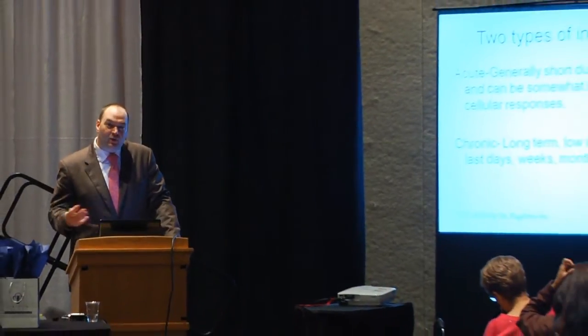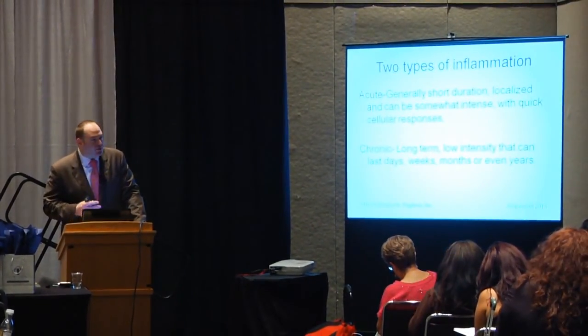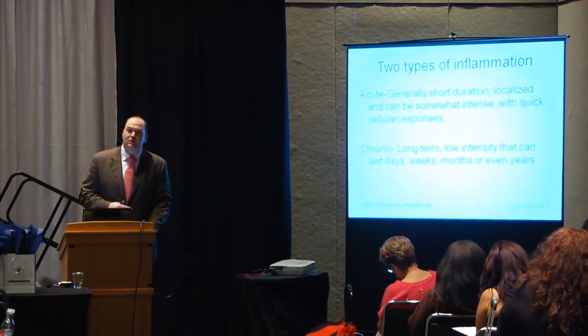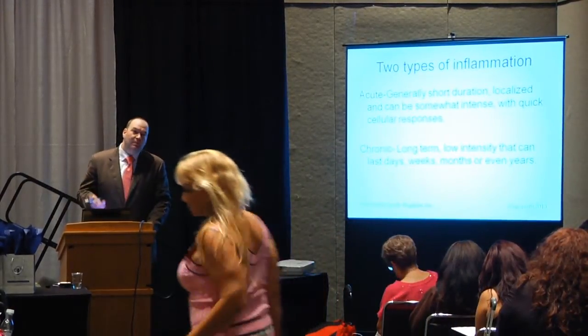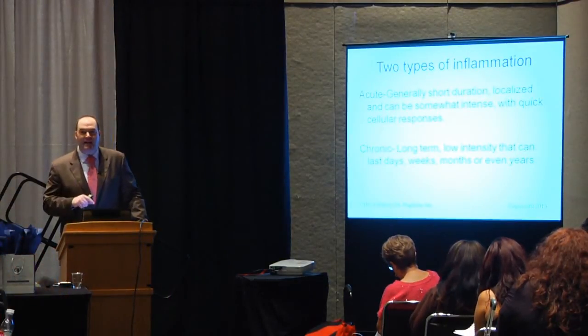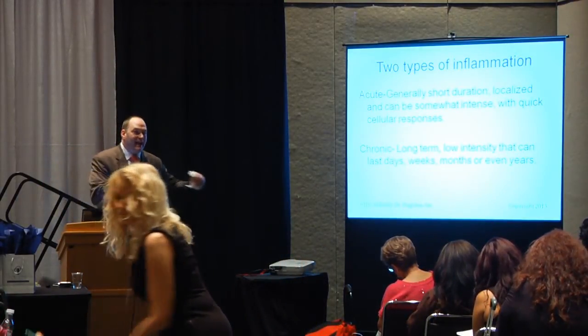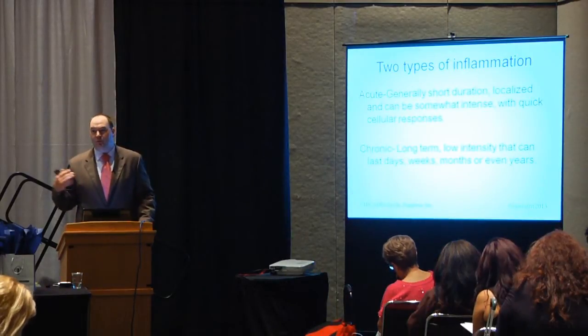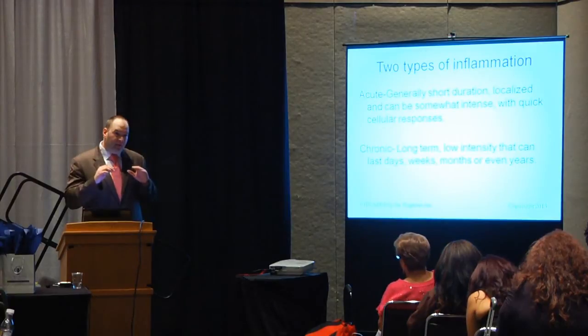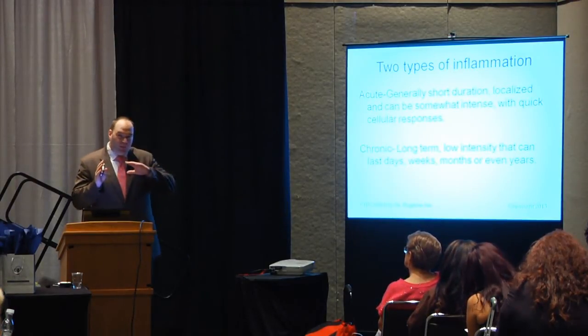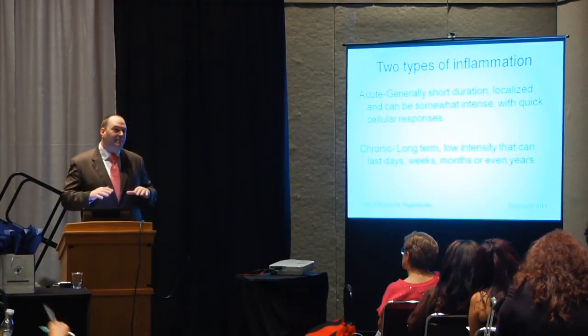There are two types of inflammation we generally categorize: acute and chronic. Acute inflammation has a short duration, is localized, somewhat intense, and has a quick pain response. Chronic inflammation is long-term, lower intensity, and can last for days, weeks, months, or even years. It's chronic inflammation that we associate with the aging process. We can now link aging back to cumulative inflammatory processes, and most aging theories are built on the premise that the body is eventually broken down by all the inflammation that occurs.